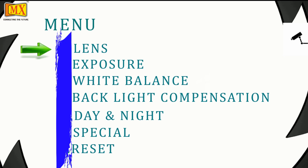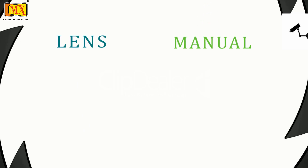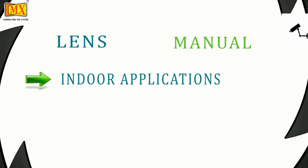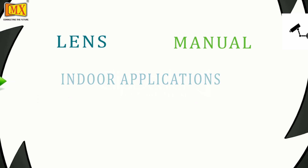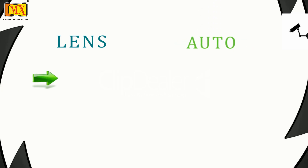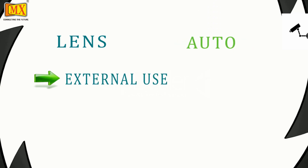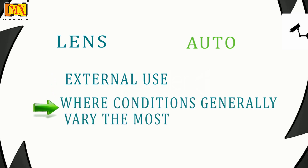Let's see the first option, that is the Lens. In Lens, we have two options: Automatic or Manual. Setting the lens to Manual is best suited for indoor applications where the lighting level is controllable and consistent. For external use, where conditions generally vary the most, an Automatic lens offers the best performance as the aperture automatically adjusts to create the optimum image.